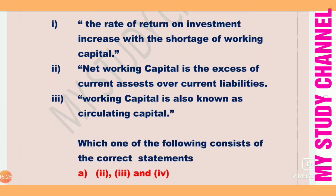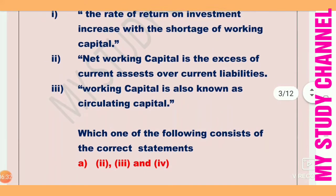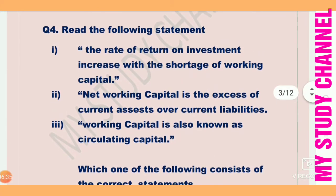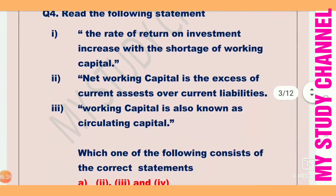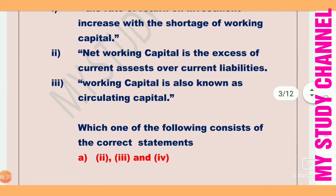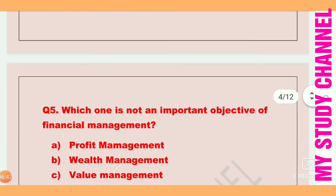Net working capital is the excess of current assets over current liabilities — this is correct. Working capital is also known as circulating capital — this is also correct. There is a fourth option that is also correct, though it was not written on screen.